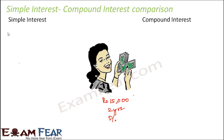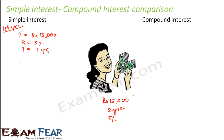We will look at it year by year. Sheila did this deposit for two years, so let us first look at the first year. In the first year, the principal amount was rupees 15,000, the rate of interest was five percent, and the time period is one year. When we calculate the interest using P×R×T÷100, we get interest as rupees 750. So the amount she gets back at the end of one year is rupees 15,750.